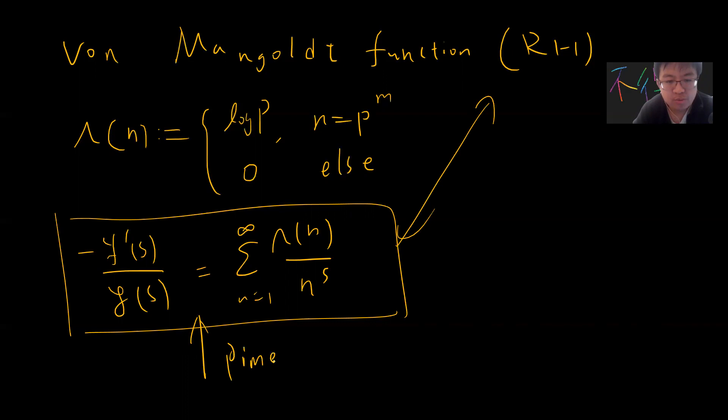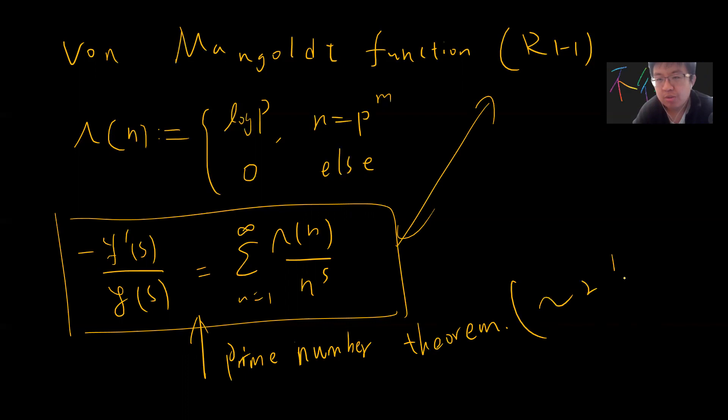You can start from here to prove the prime number theorem, and the results will be very simple from this direction, though the full proof may take about two hours step by step. If you already understand analytic continuation, you just apply the product formula on both sides and you're done.